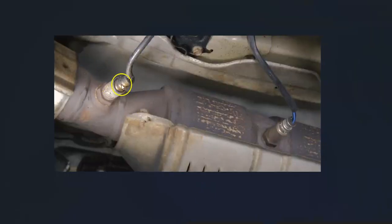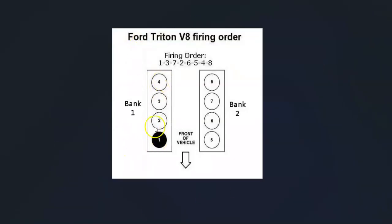The first thing to do when you get this code is go check out this bank one sensor one oxygen sensor. Bank one is always the side of the engine with the number one cylinder. So if you find the number one cylinder, that's going to be bank one, and then the first sensor going down on that side is going to be sensor one.